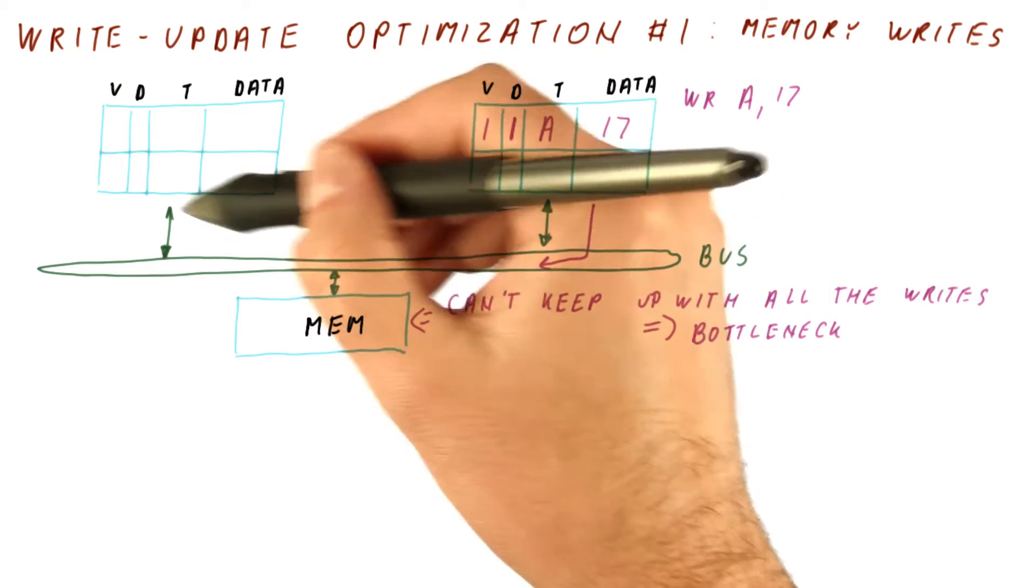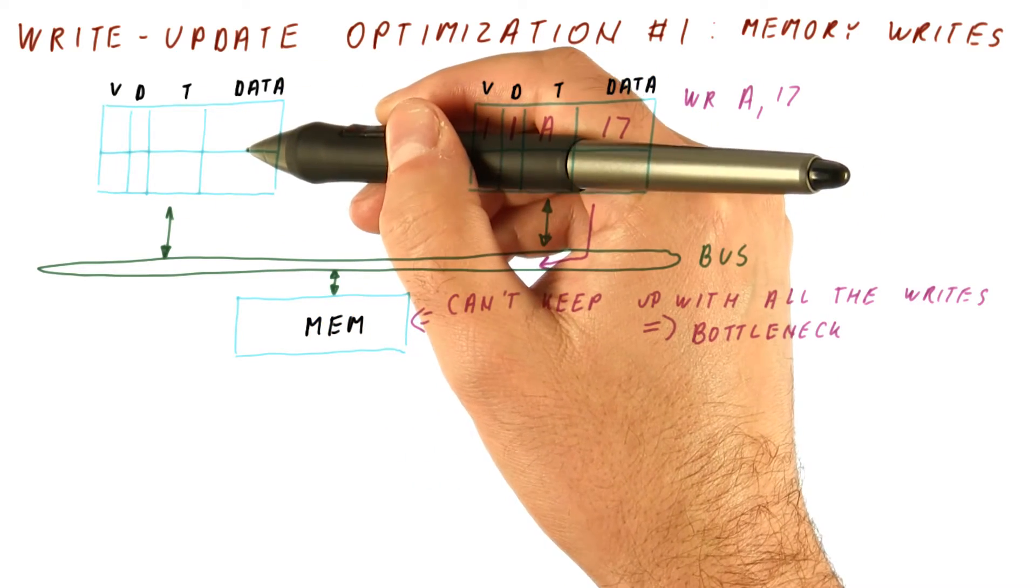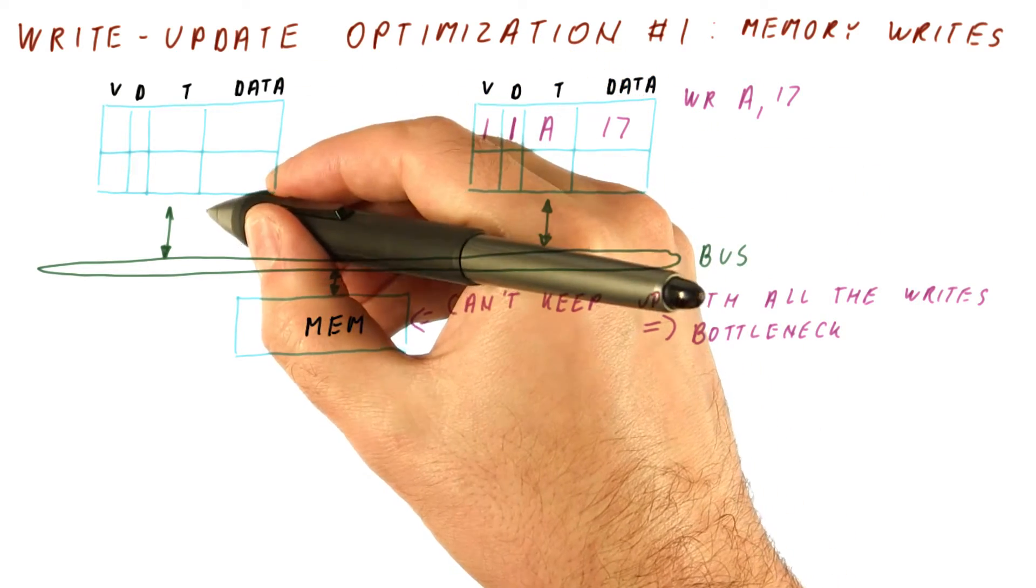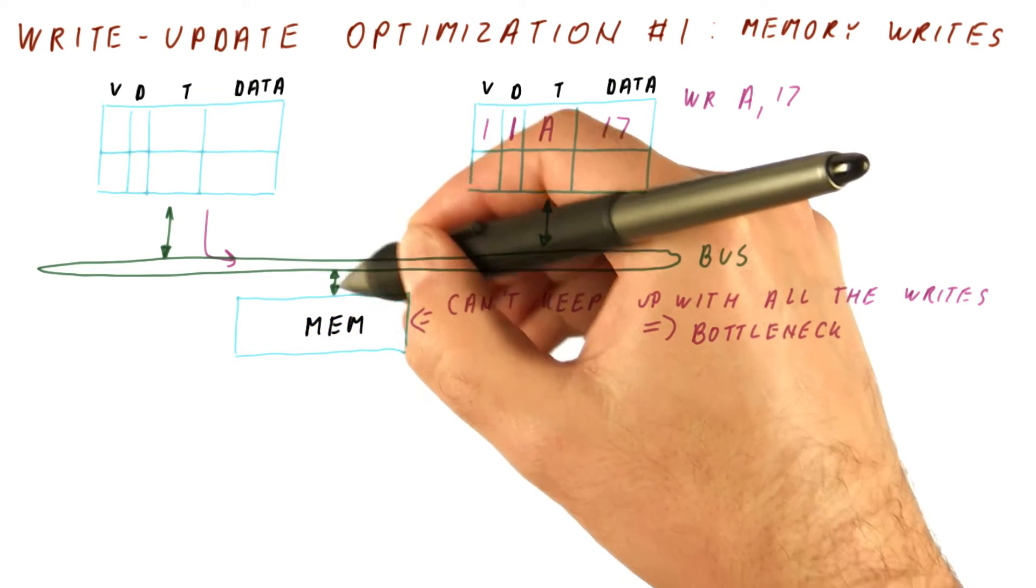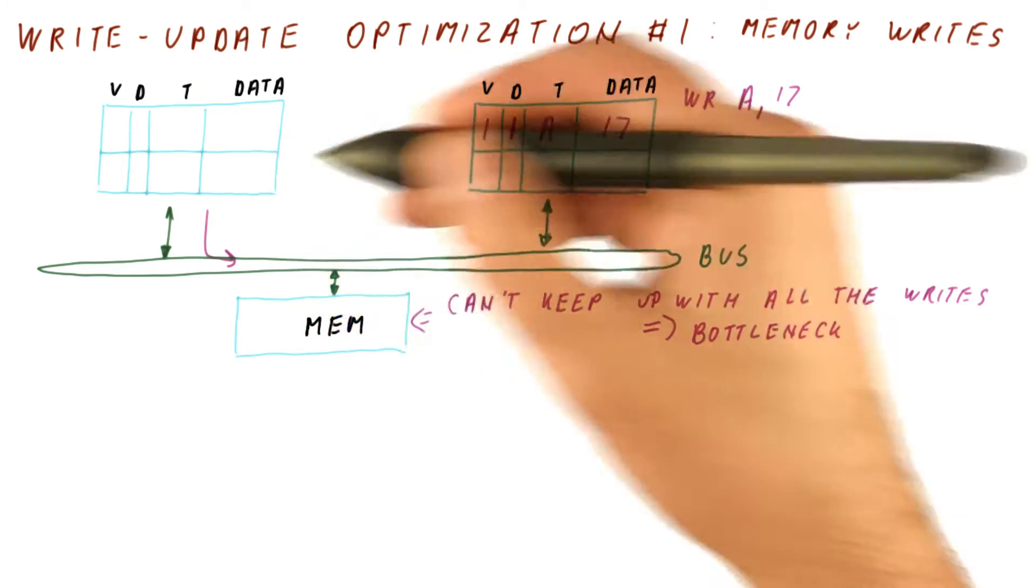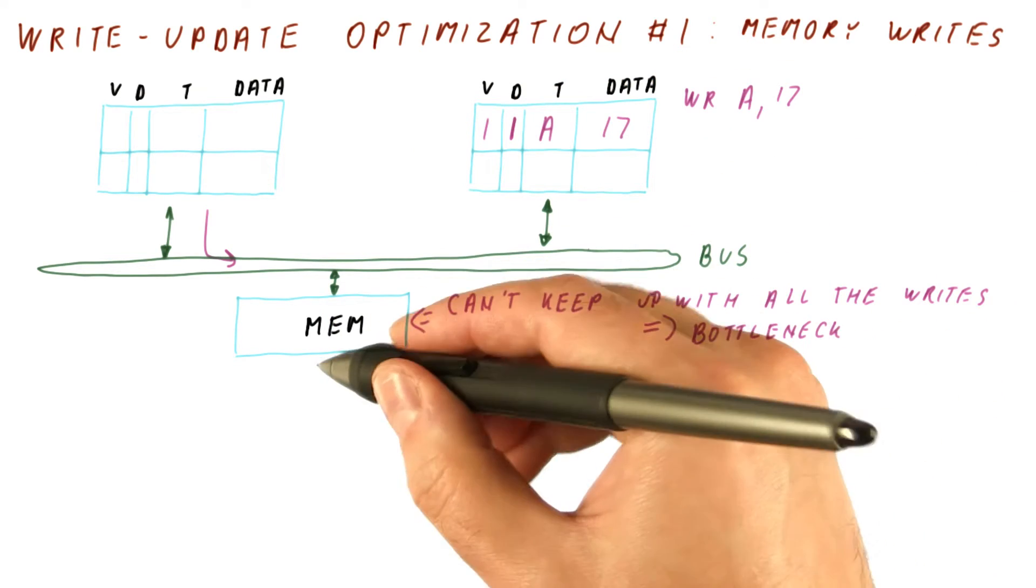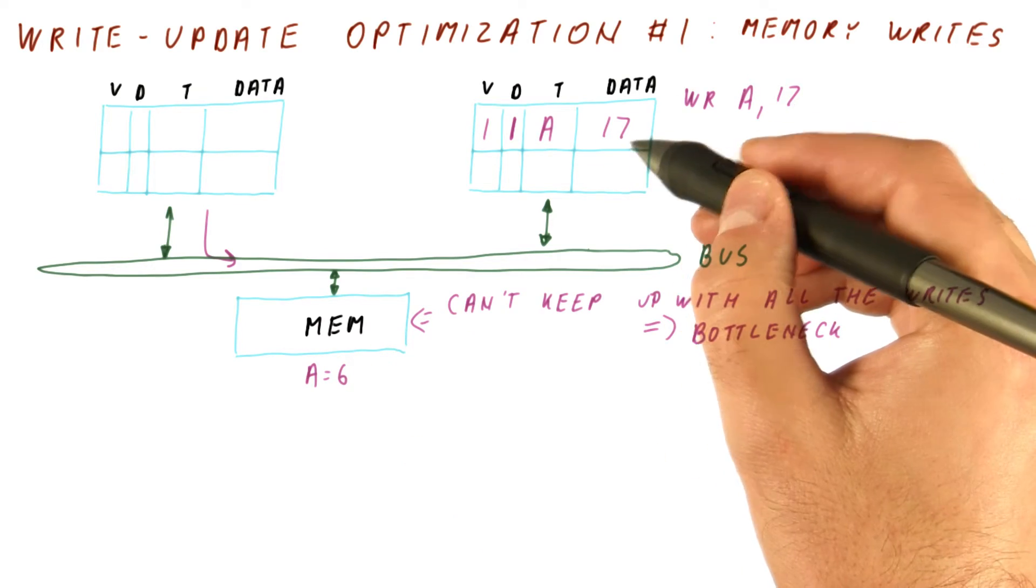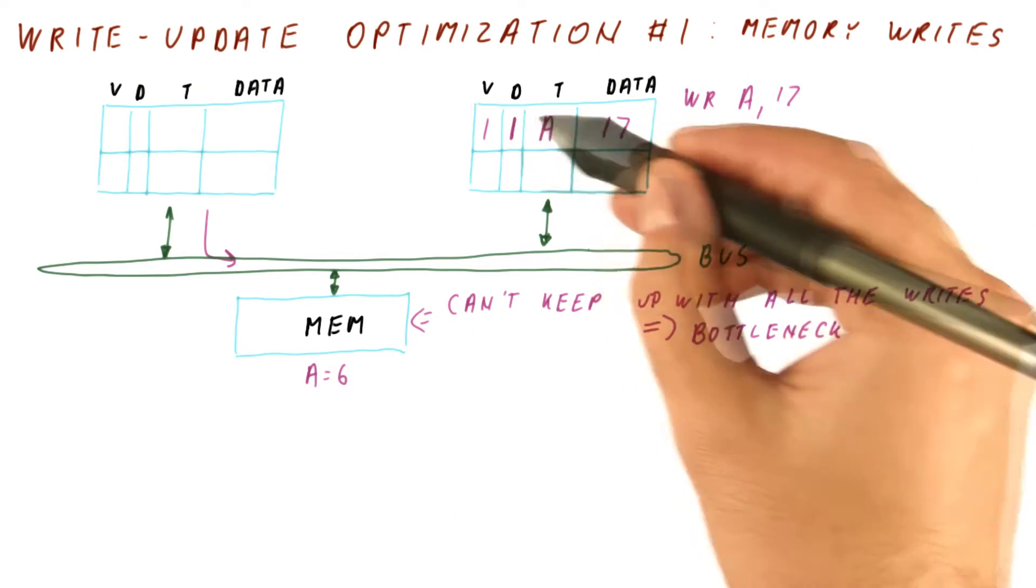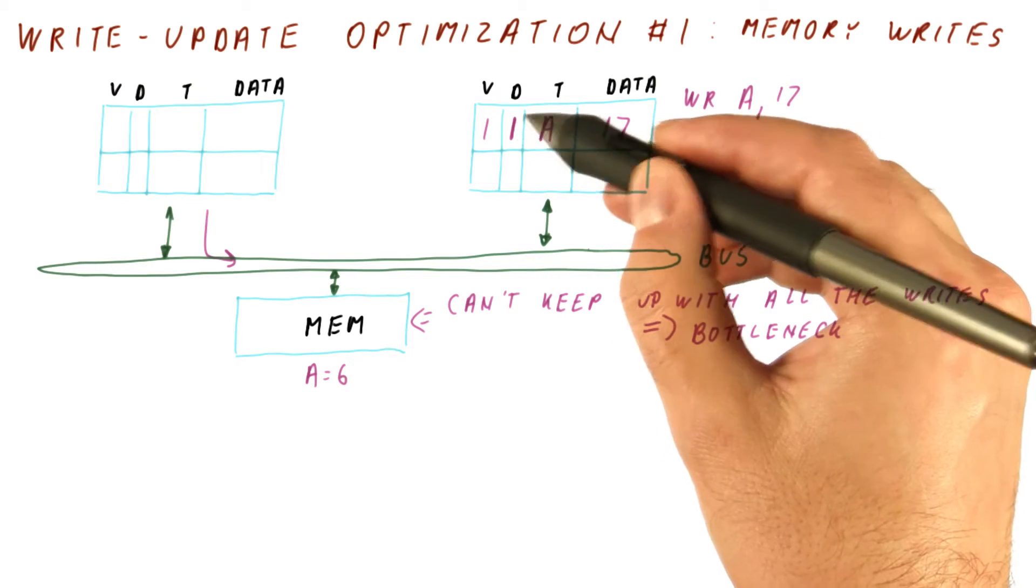Suppose that this cache replaces this block and then wants to read it again. So it issues a request to read on the bus, and now normally the memory would respond with a value. But the memory still has the old value of A equals 6. This cache here has the only up-to-date copy. That's what the dirty bit also stands for.